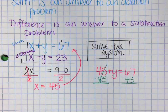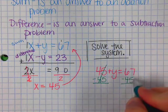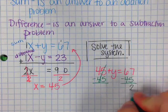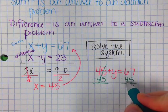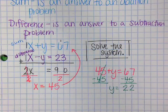67 minus 45, 67 minus 45, 7 minus 5 is 2, 6 minus 4 is 2. So y equals 22.